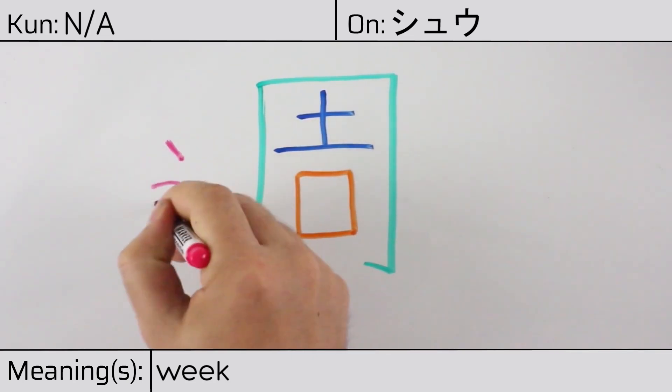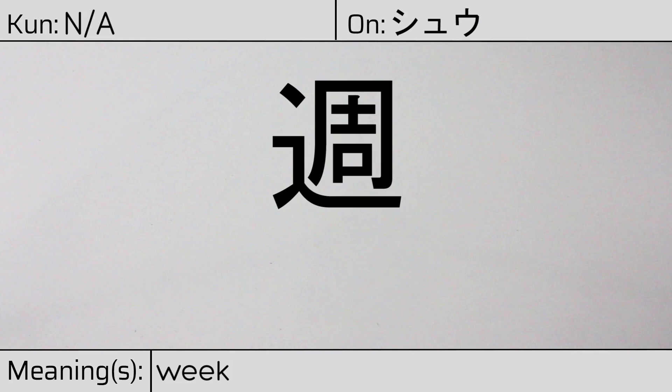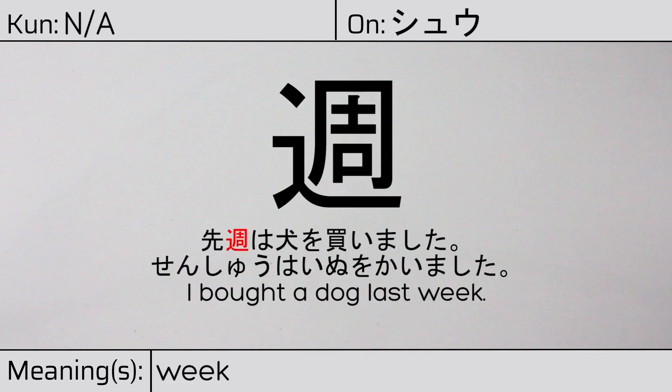This character is made up of the following radicals or parts: an enclosure radical on the outside, followed by the earth kanji, then the mouth radical at the bottom, and finally the radical meaning walk or street on the left. You can remember this kanji by the following hint: the weekly rhythm of merchants going out to ply their trade in the vicinity. Our example sentence is: 先週は犬を買いました — I bought a dog last week.